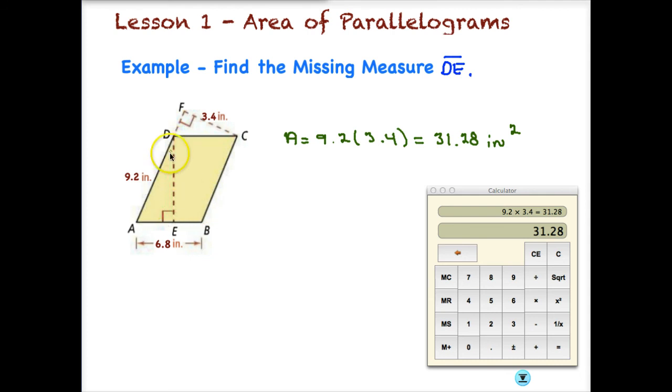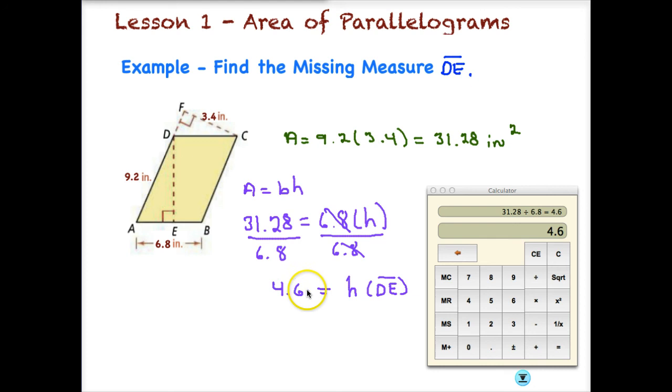I can probably work backwards to find this height, this DE, because I have a base. So let's work backwards. Well, I know my area. So we're going to use our area equals base times height formula. And our area is 31.28. And I have a new base here of 6.8. And I just need to find h. So I can divide both sides by 6.8 in order to solve for h. 6.8, actually let's do 31.28 divided by 6.8. And that tells me that that height h, or DE, I should say, is equal to 4.6 inches. And so this is 4.6.